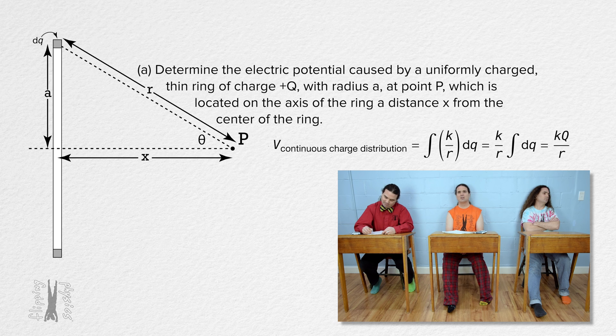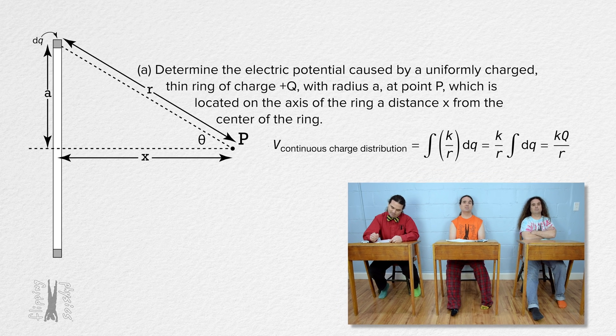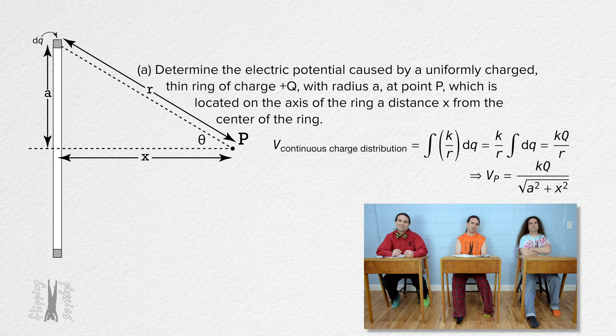the charge in the ring, but r is not one of our known values. So, the Pythagorean theorem tells us we can replace r with the square root of the quantity a squared plus x squared and we have the electric potential at point p caused by the uniformly charged thin ring. Very nice, Bobby.